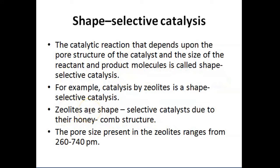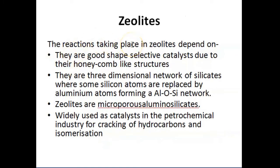We have a type called shape selective catalysis, where the catalytic reaction depends upon the pore structure of the catalyst and the size of the reactant and product molecules. Catalysis by zeolites is an example of shape selective catalysis. Zeolites are considered shape selective catalysts because of their honeycomb structure, and their pore size ranges from 260 to 740 pm.